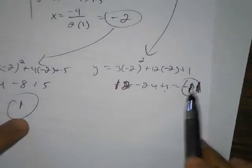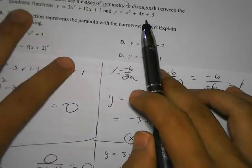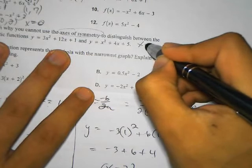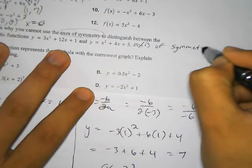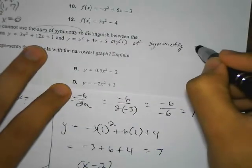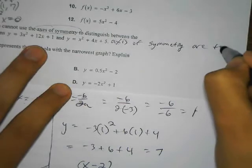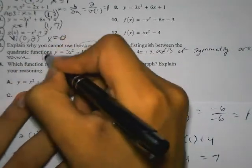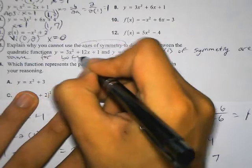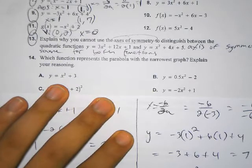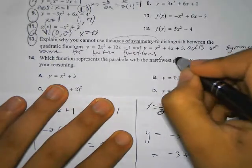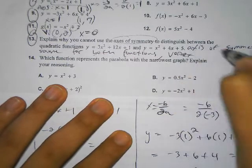So here, the axis of symmetry are the same for both functions. The vertex, however, are different. So that's 13.